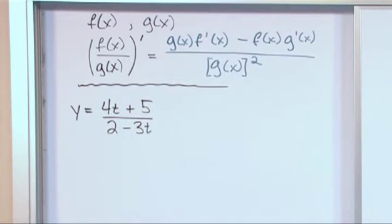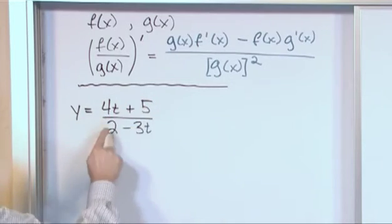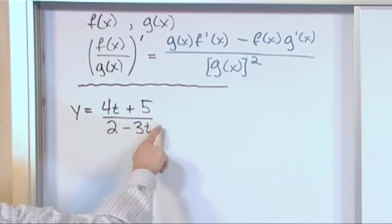Y equals 4t plus 5 divided by 2 minus 3t. So you see this is a quotient because we're basically dividing two things. The numerator is a function, this is what it is. The denominator is a